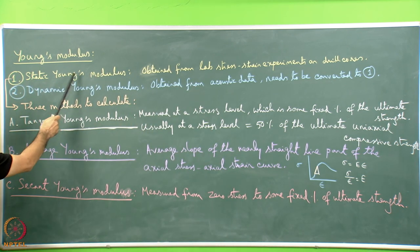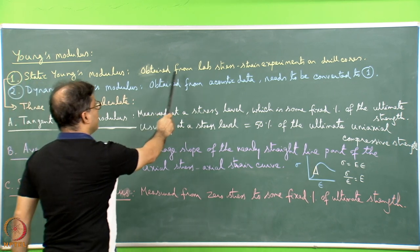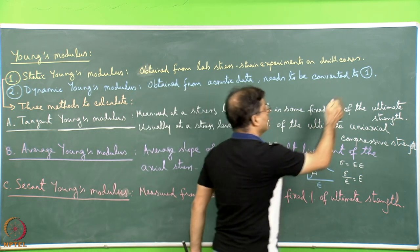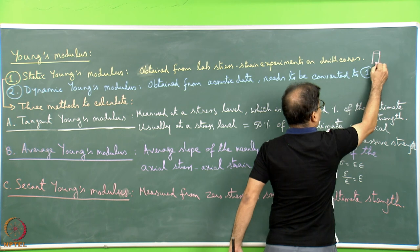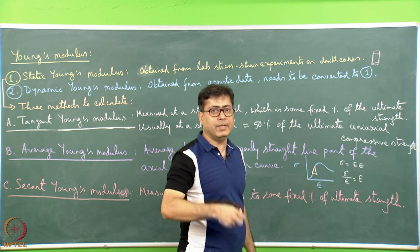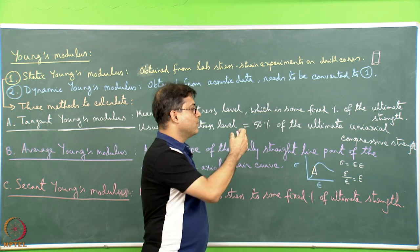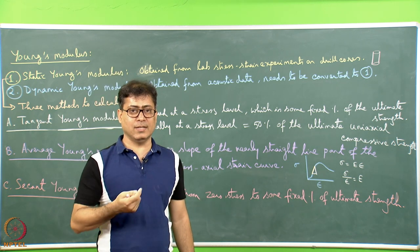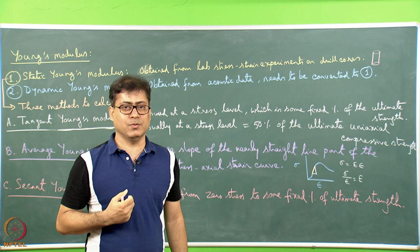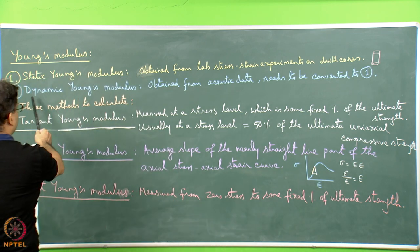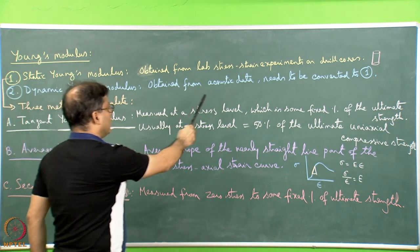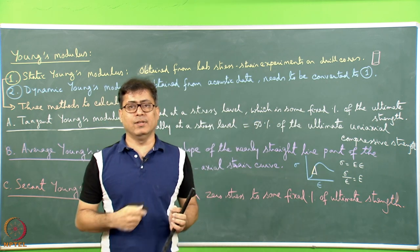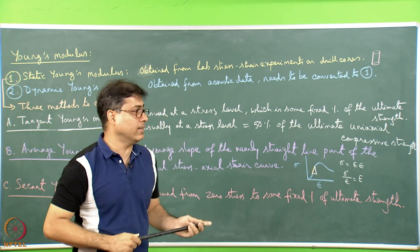One is called the static Young's modulus, obtained from laboratory stress experiments on drill cores. The drill core — a cylindrical rock sample — is taken to the laboratory, stress is applied, strain is measured, and the linear relationship is used to find the Young's modulus. The second approach is the dynamic Young's modulus, obtained from acoustic data, which is then converted to static Young's modulus.